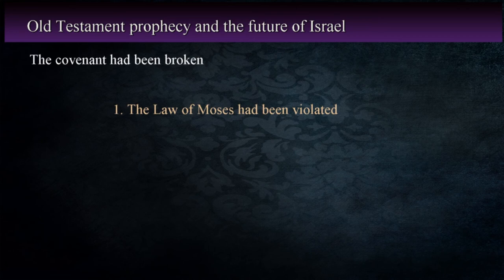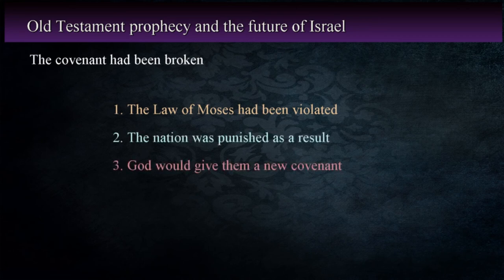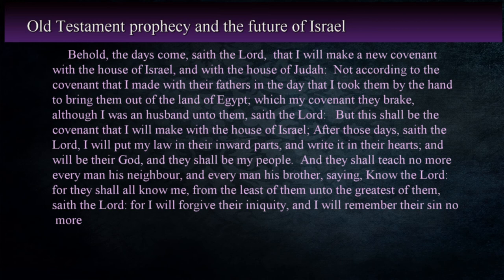Jeremiah also speaks of the fact that the covenant had been broken, the nation punished, and as a result, God would give them a new covenant — a significant statement that the New Testament will provide additional information on. Jeremiah states in Jeremiah 31:31-34: 'Behold, the days come, saith the Lord, that I will make a new covenant with the house of Israel and with the house of Judah, not according to the covenant that I made with their fathers in the day that I took them by the hand to bring them out of the land of Egypt, which my covenant they break, although I was a husband unto them, saith the Lord. But this shall be the covenant that I will make with the house of Israel. After those days, saith the Lord, I will put my law in their inward parts, and write it in their hearts, and will be their God, and they shall be my people. And they shall teach no more every man his neighbor, saying, Know the Lord. For they shall all know me, from the least of them unto the greatest of them, saith the Lord. For I will forgive their iniquity, and I will remember their sin no more.'